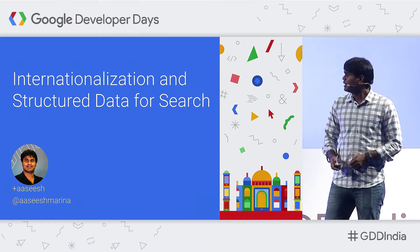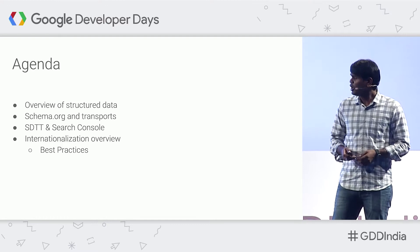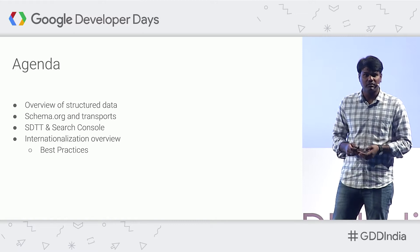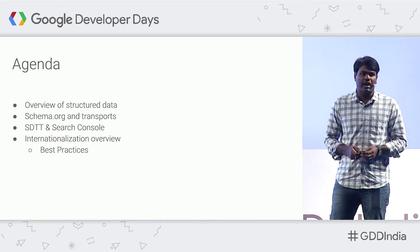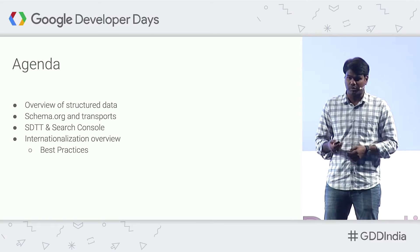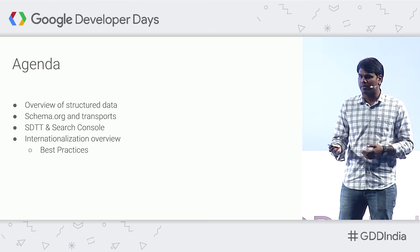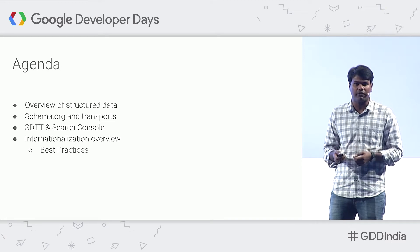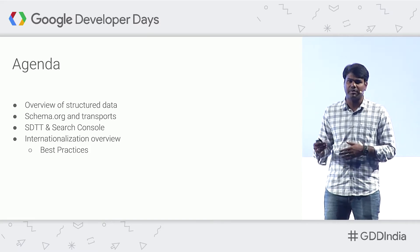In this session, we'll be looking at the basics of structured data — what structured data is, how Google uses structured data, and what features are powered by structured data. We'll also look at schema.org and some transport layers that Google supports, as well as resources Google provides to debug structured data issues. And finally, we'll look at some best practices for websites which have multiple languages.